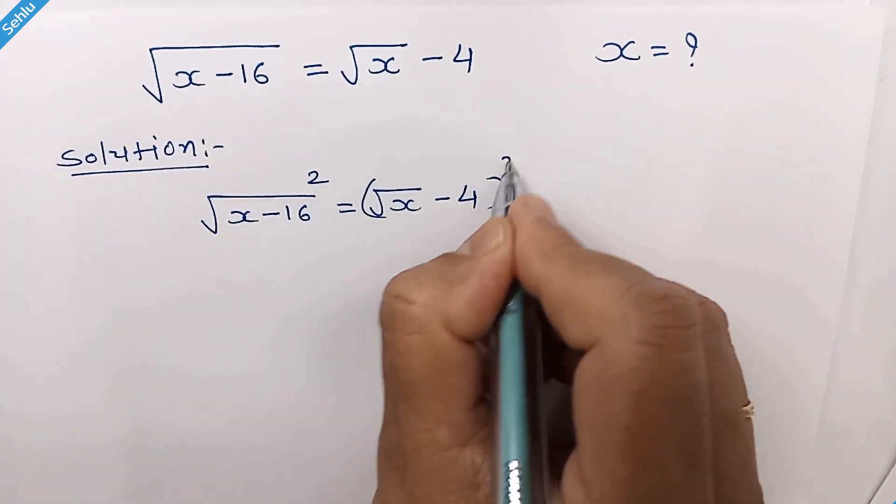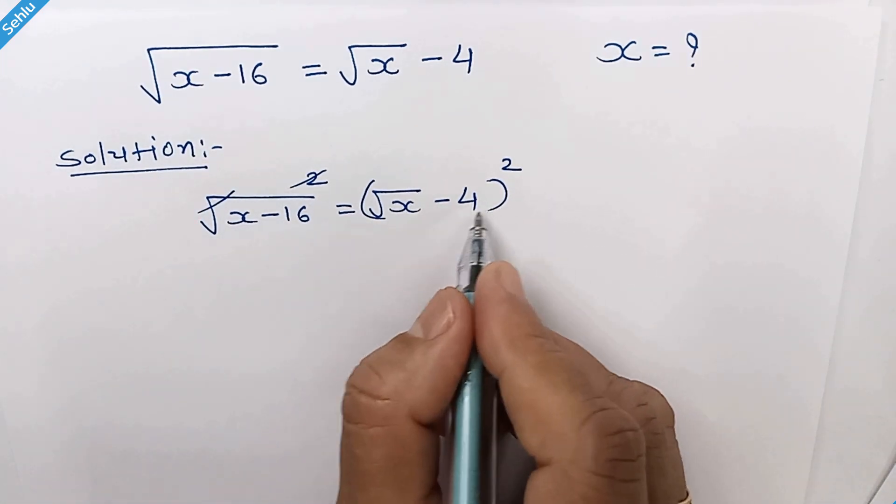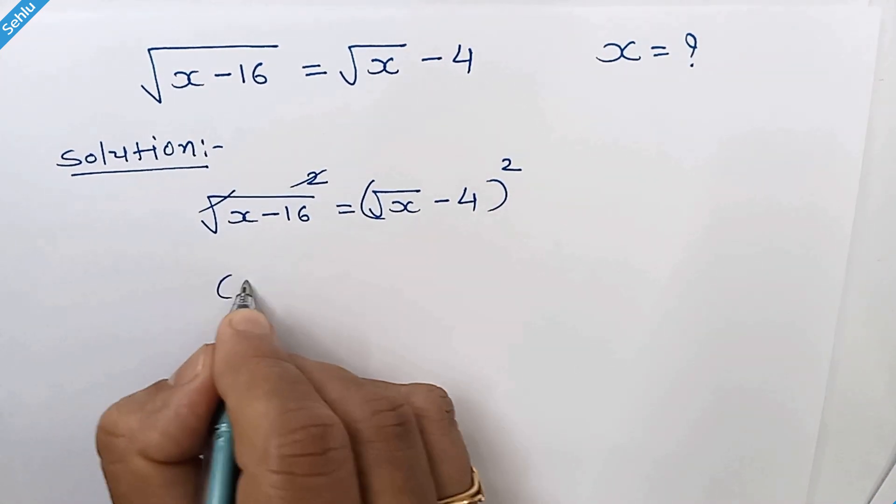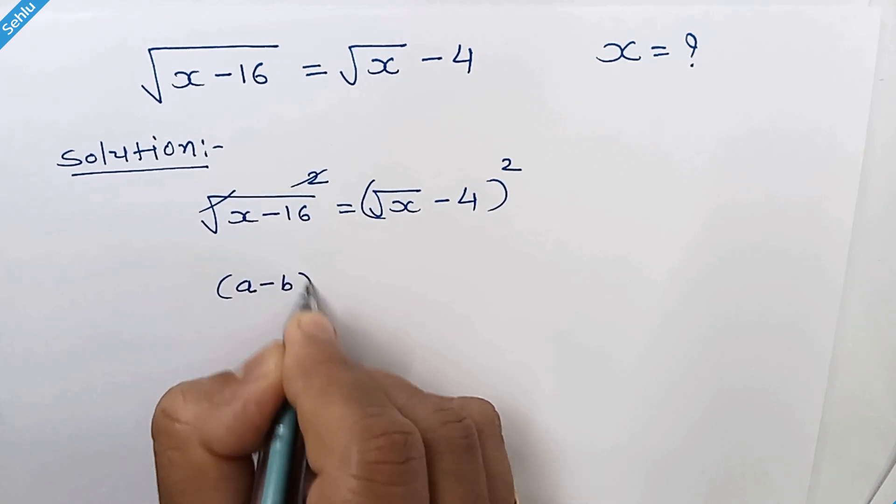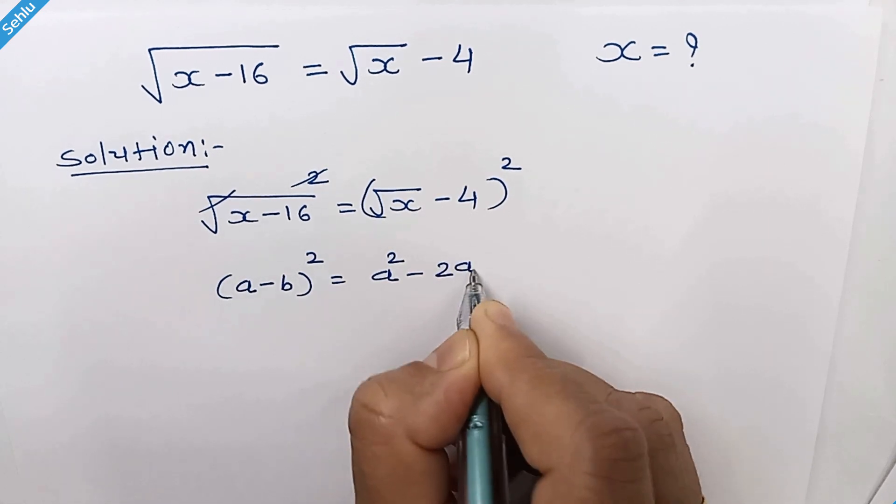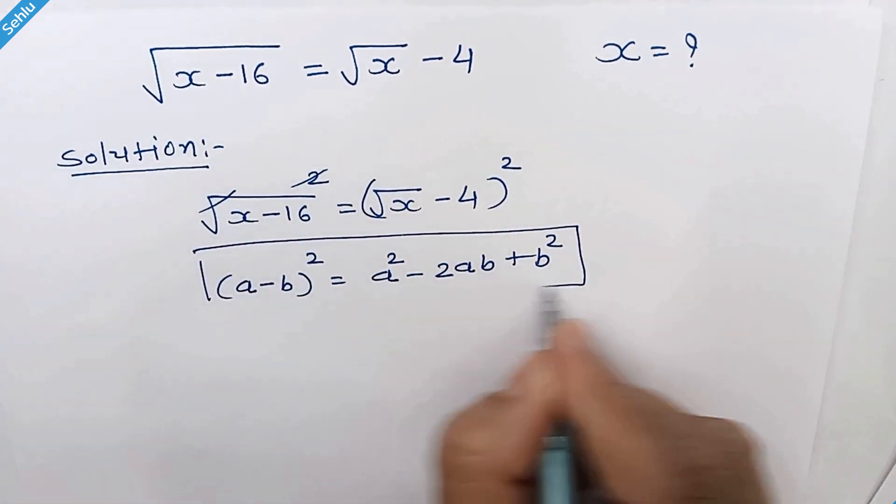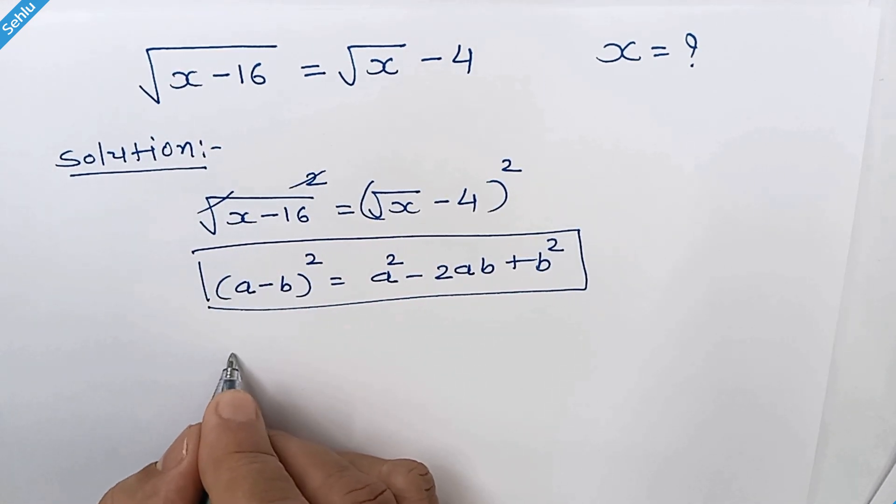The square and square root get cancelled out. Here we will use an identity: a minus b whole square, which can be written as a square minus 2ab plus b square. So we can write it like...